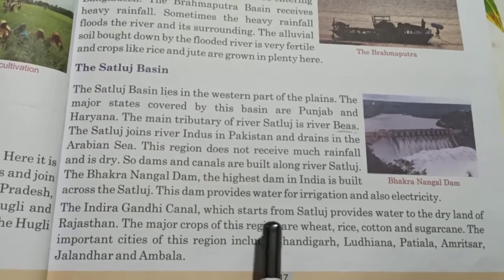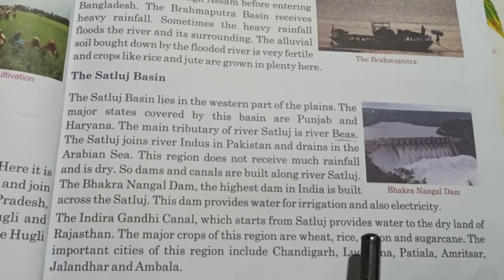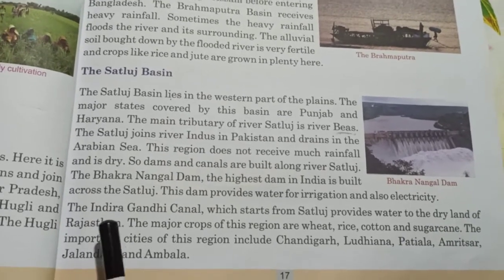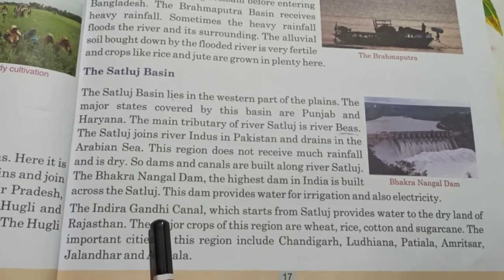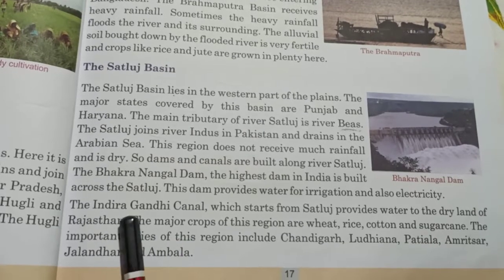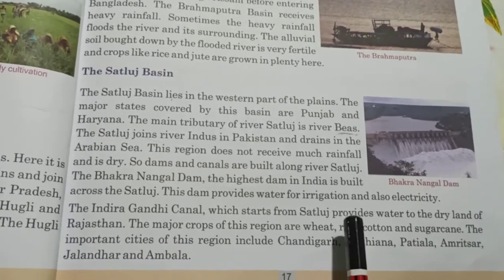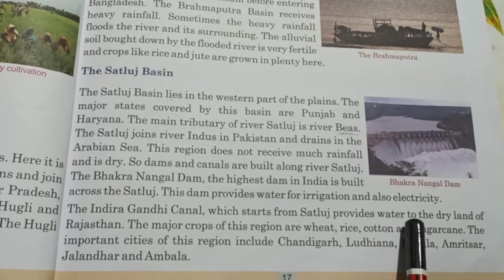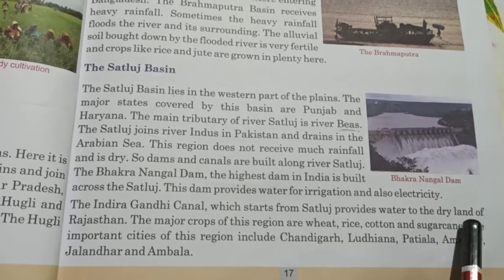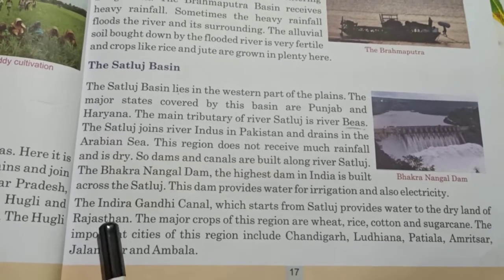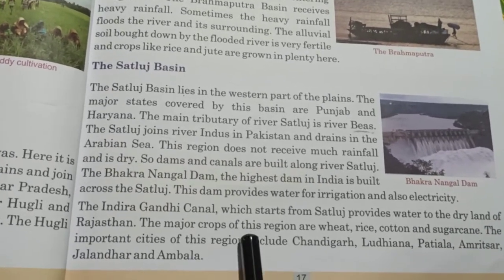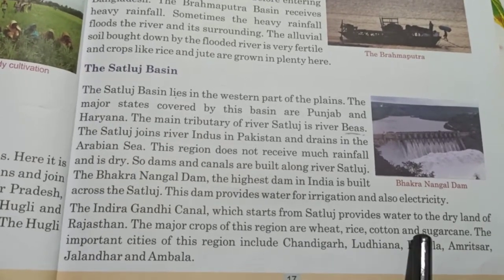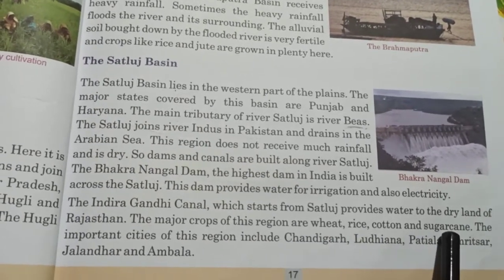The Indira Gandhi Canal, which starts from the Sutlej, provides water to the dry land of Rajasthan. The major crops of this region are wheat, rice, cotton, and sugarcane.